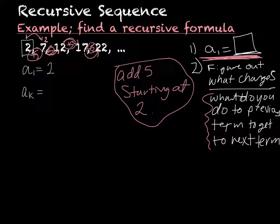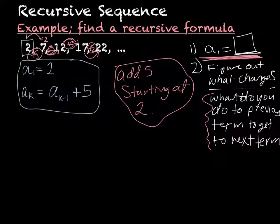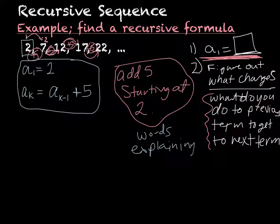To denote my first term, A sub K is going to equal the previous term. I write that as A sub K minus 1, because that is one number before the A sub K term. And then I'm adding 5. So this would be my recursive formula: A sub K equals A sub K minus 1 plus 5.